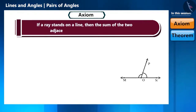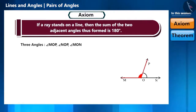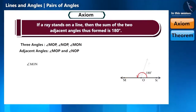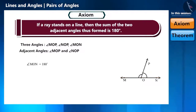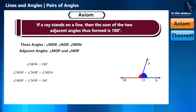If a ray stands on a line, then the sum of the two adjacent angles thus formed is 180 degrees. If you observe the figure, there are three angles here. Can you tell the names of the three angles? Angle MOP, angle NOP, and angle MON, where angle MOP and angle NOP are adjacent angles. The measure of angle MON is 180 degrees since MON is a straight line, and a straight line always makes an angle of 180 degrees. By looking at the figure, we can easily say that angle MOP plus angle NOP is equal to angle MON. Therefore, angle MOP plus angle NOP is equal to 180 degrees.